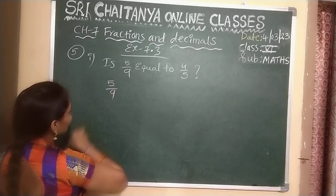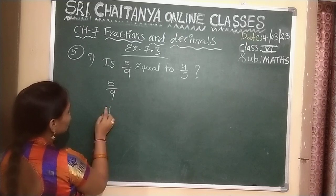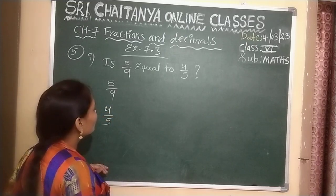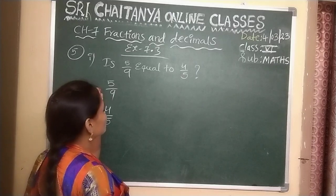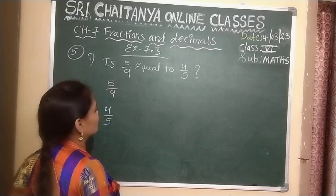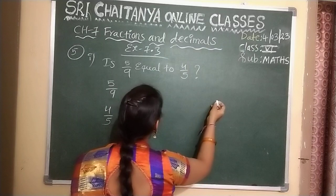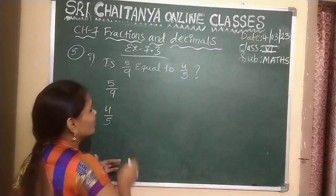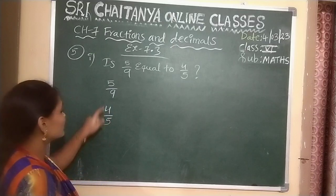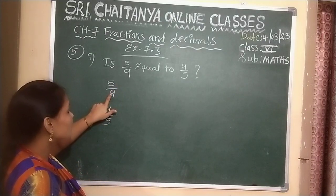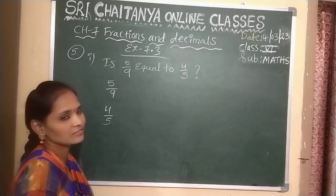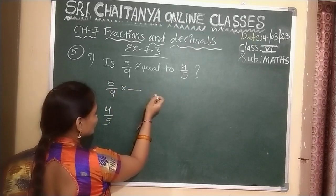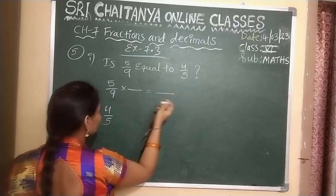Here, 5 by 9 and 4 by 5. Now, first convert these unlike fractions into like fractions by taking LCM of the denominators. Otherwise, a simple way: this denominator, you can multiply with this fraction, and this denominator, you can multiply with this fraction. Like that also we can do — no problem. Or take LCM and do — no problem.